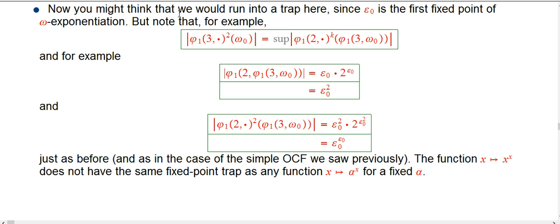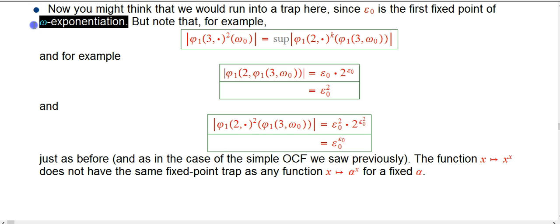The first thing is you might think we would run into a trap at this point. You know that epsilon naught is very special — it's a fixed point of omega exponentiation. And so if that's your way of creating new things, for example that's the Veblen phi function, then you run into a fixed point and have to do a little bit of work to get yourself out of that trap.